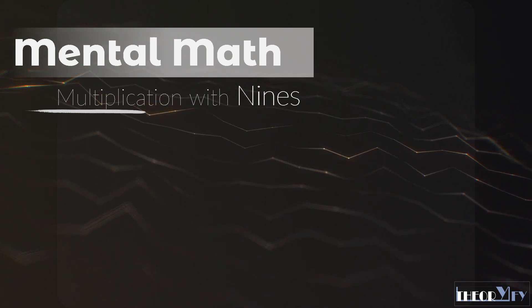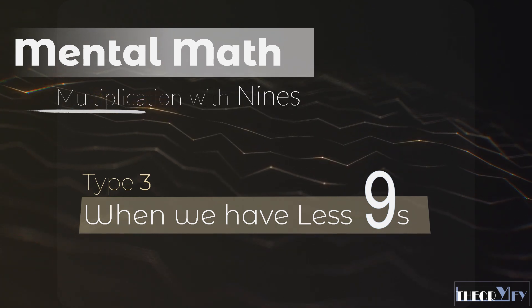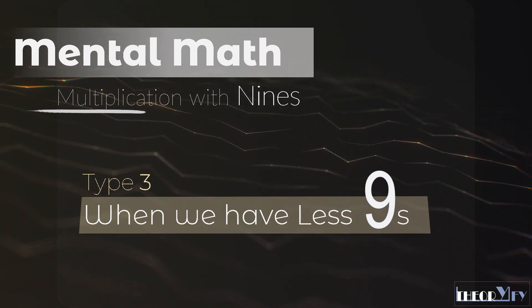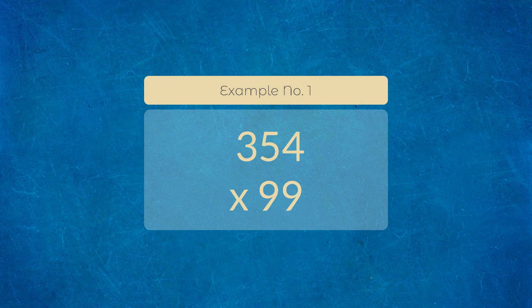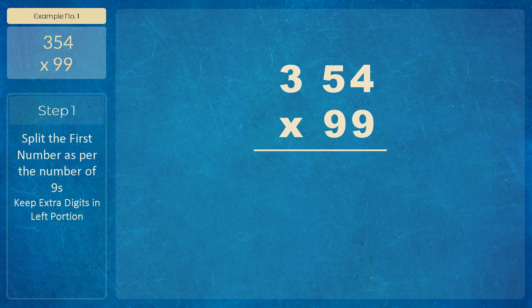Now we are going to learn Type 3 of multiplication with 9s, where we have a lesser number of 9s in the multiplier. Let's start with an easy example: 354 × 99. Step 1 — split the first number as per the number of 9s. Pay attention, this is a little tricky: keep extra digits in the left portion.